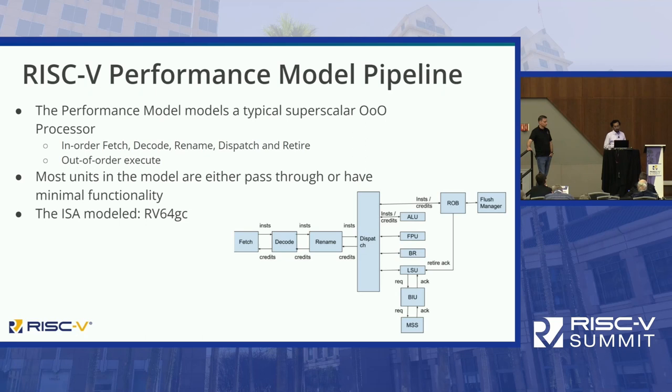The ISA that we model is RV64GC — a fairly common ISA.